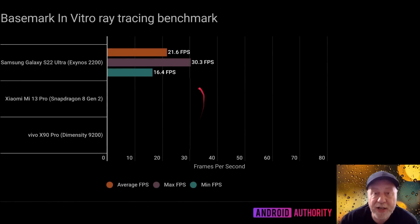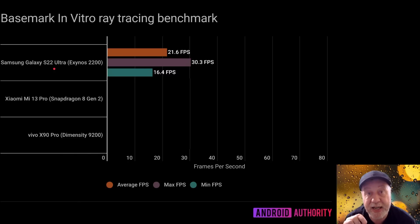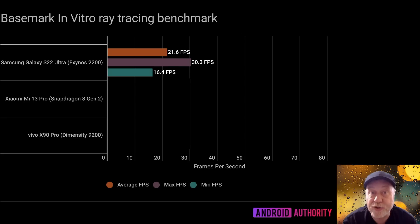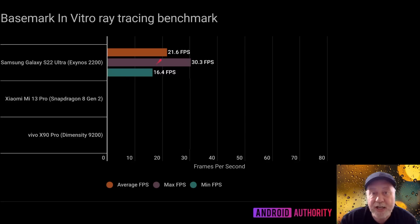Here's our first benchmark. You get three figures per device. Starting with the Samsung Galaxy S22 Ultra — that's last year's Samsung Galaxy — which has the Exynos 2200 with the AMD-based GPU. The average during the test was 21.6 frames per second, the maximum was 30 fps, and it dropped down to 16.4 fps in the hardest scenes.